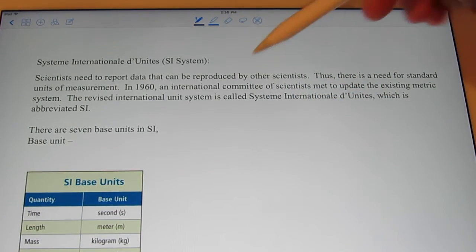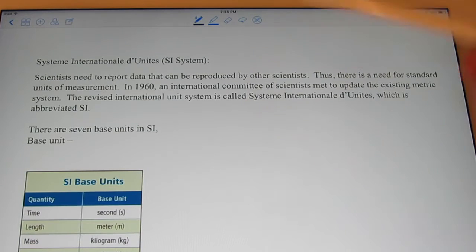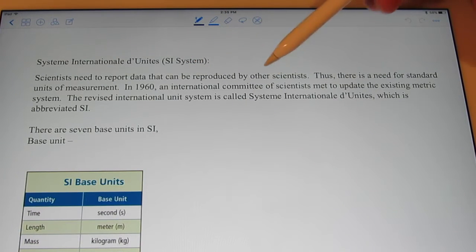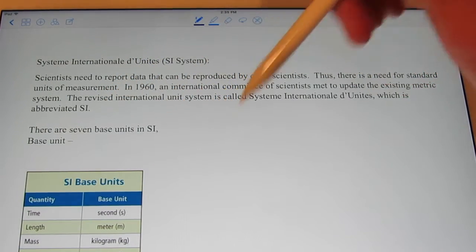In 1960, an international committee of scientists met to update the existing metric system. The revised international unit system is called the System International Day United, which is abbreviated simply SI for System International.